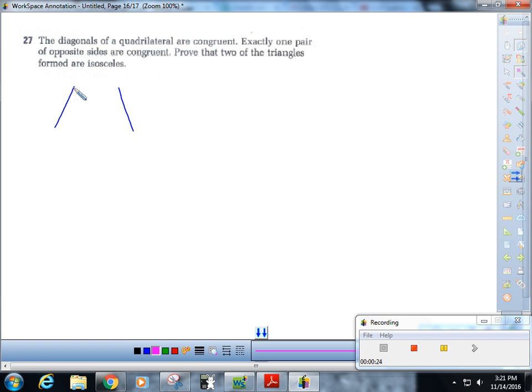But having taught geometry for a long time, I understand that the shape they are referring to is an isosceles trapezoid. Okay, this shape has exactly one pair of congruent opposite sides and the diagonals are congruent.